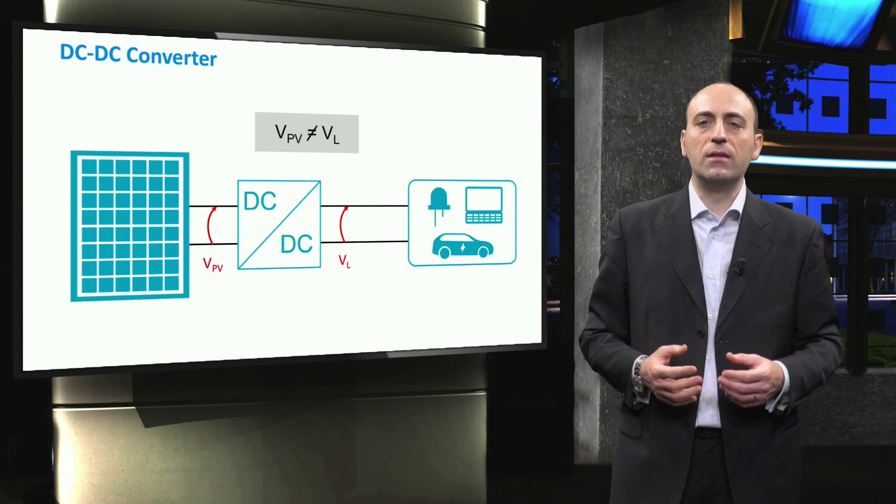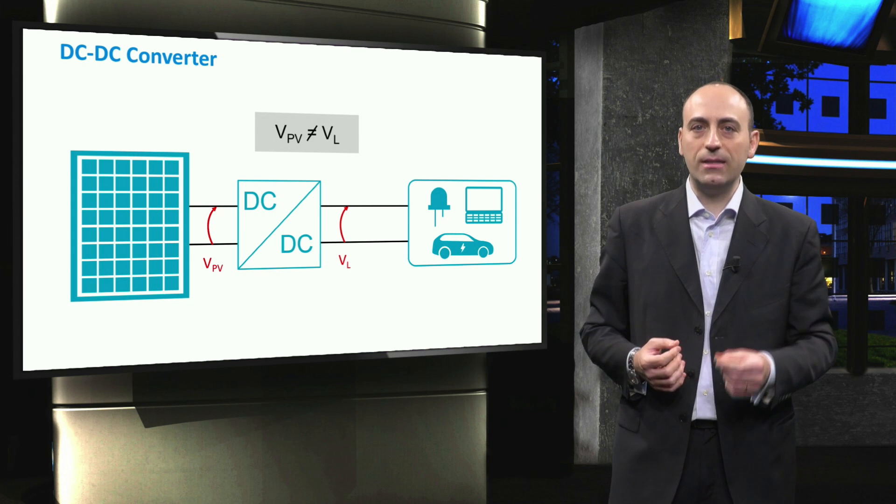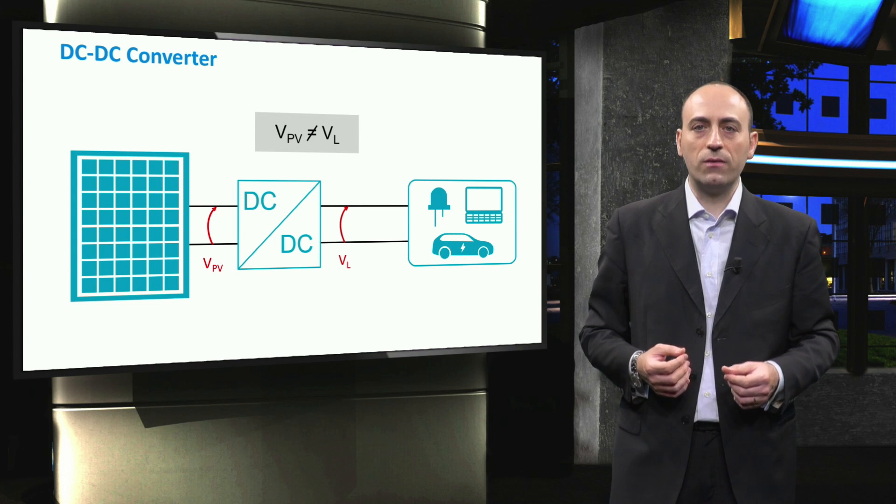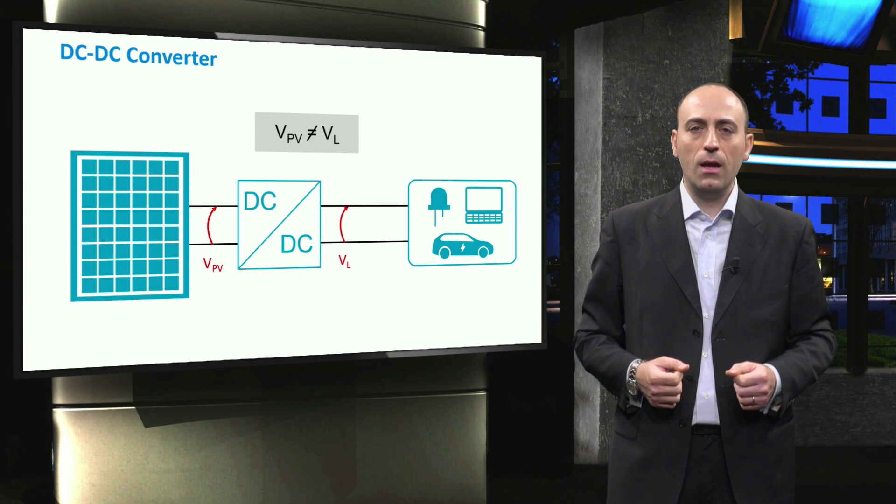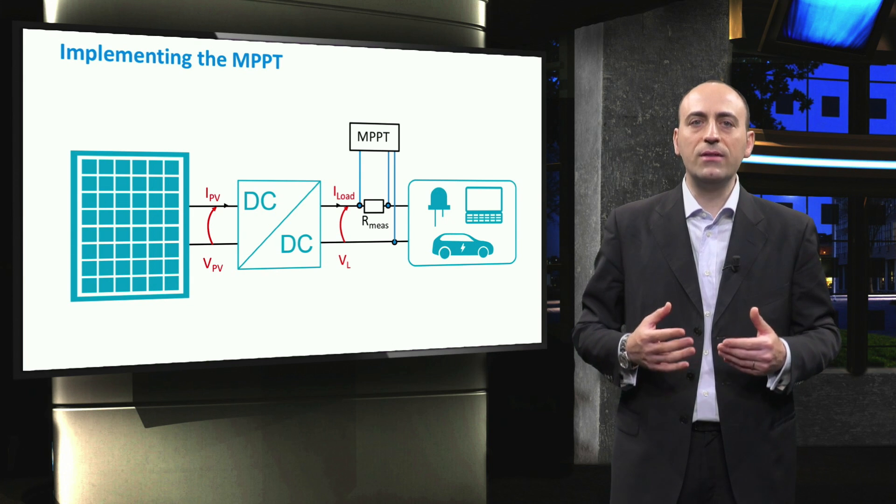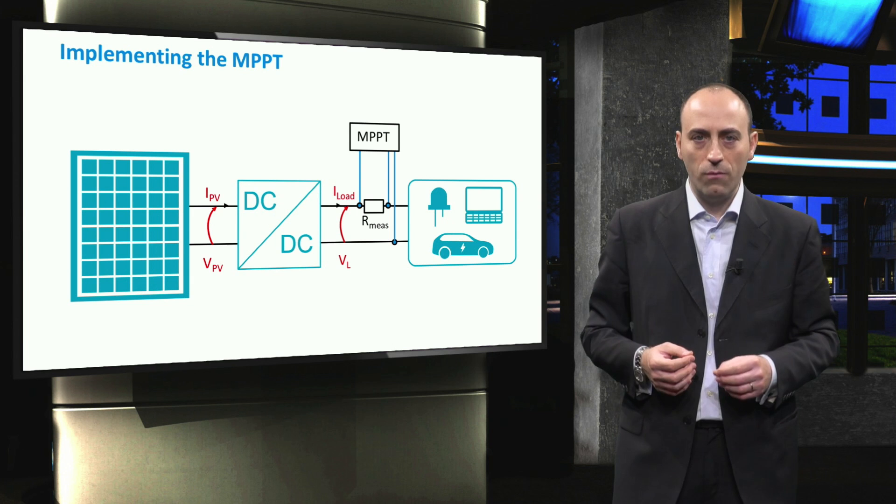We have already seen that the maximum power point tracker controls the operating point of the module, but it cannot set it. This task is then performed by the DC-DC converter, which varies the PV voltage in order to always draw the maximum power available. Adding the maximum power point tracker is nothing else than adding an additional circuit that can also be embedded on the board of the converter.